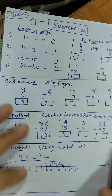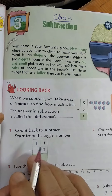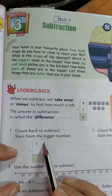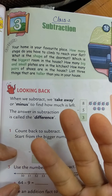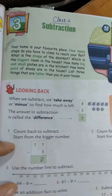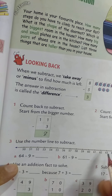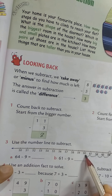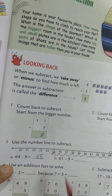In the book, the first question says count back to subtract. Start from the bigger number. For 11, count 3 back: 10, 9, 8. You will reach 8. For 64 minus 9 on the number line: circle 64, then go 9 steps back — 1, 2, 3, 4, 5, 6, 7, 8, 9 — and you will reach 55. You can do the second part the same way.